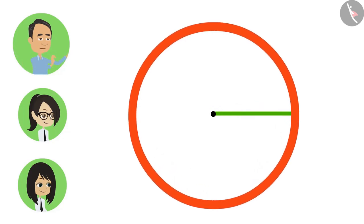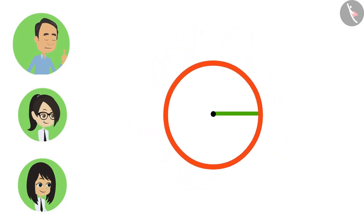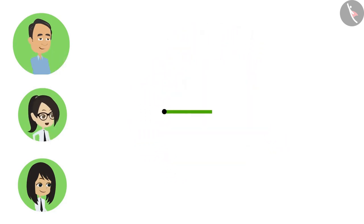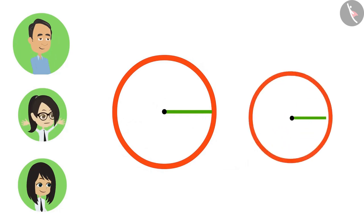Now, if we decrease this radius, then we will get a small circle. Larger the radius, the larger the circle. And smaller the radius, the smaller the circle.